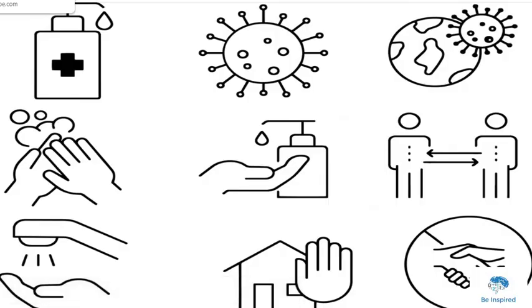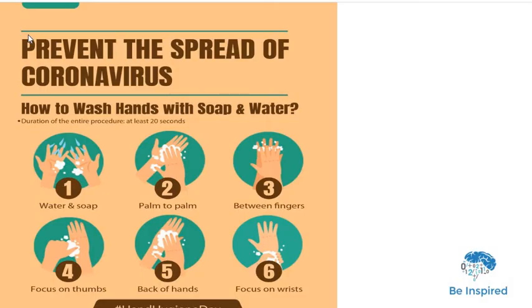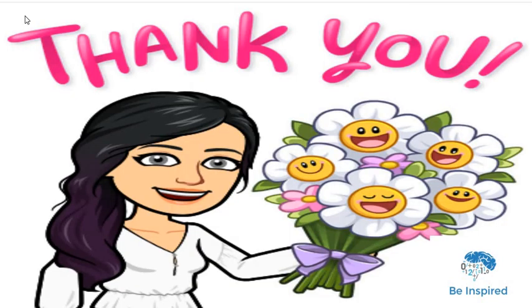So to avoid coronavirus, follow the steps. And this is the way you are going to wash your hands with water and soap. First palm, and then fingers, and then thumbs, and then back of the hands, and along with the wrists.